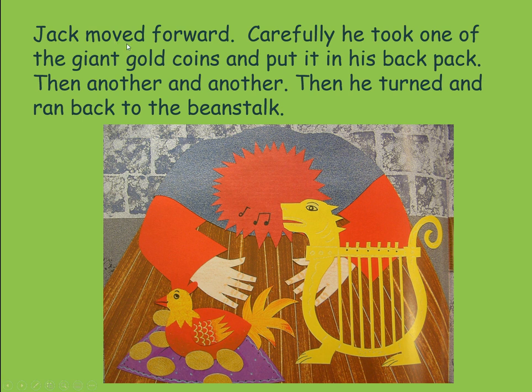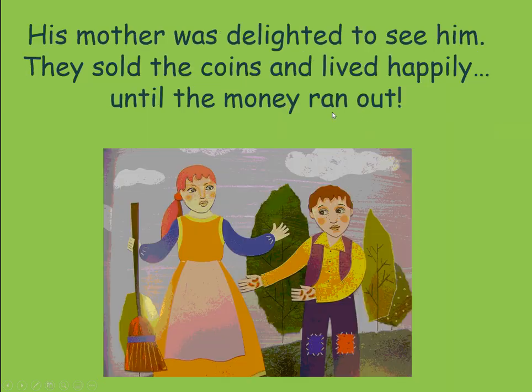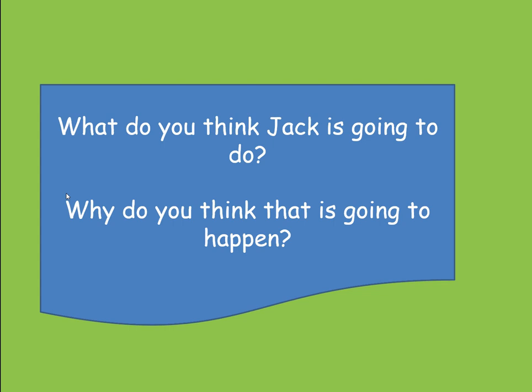Jack moved forwards. Carefully, he took one of the giant's gold coins and put it in his backpack, then another, and another. Then he turned and ran back to the beanstalk. His mother was delighted to see him. They sold the coins and lived happily until the money ran out. So at this point, what do you think Jack's going to do now? Try to explain not just what he's going to do, but why you think that's going to happen. If you do know the story already, try to think of specific reasons linked to this version of the story. Grown-ups, when you're ready, start the video again.